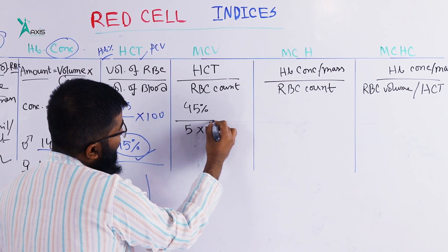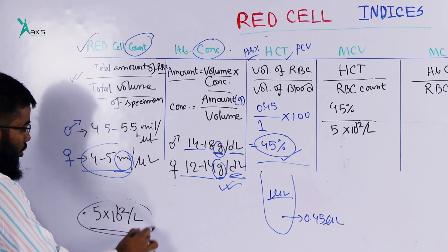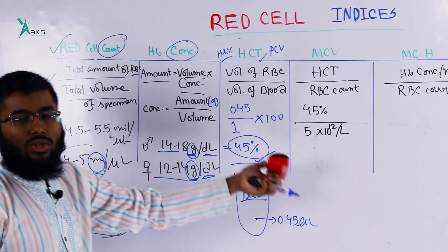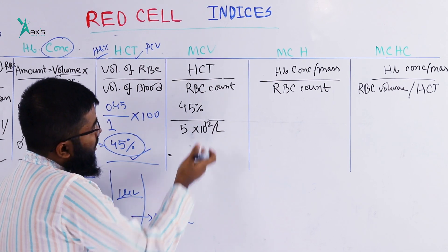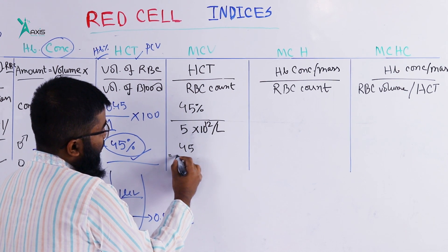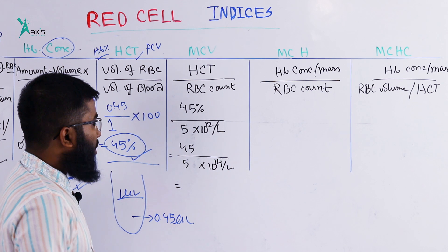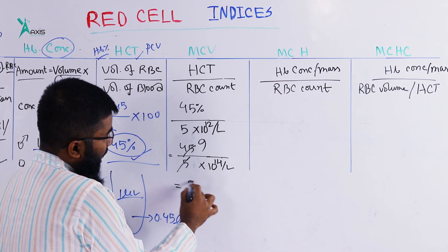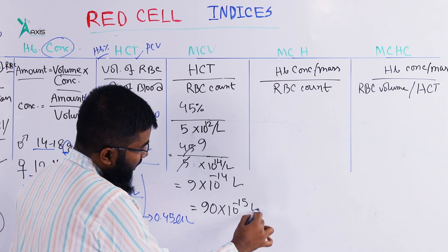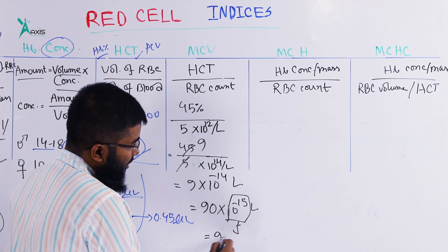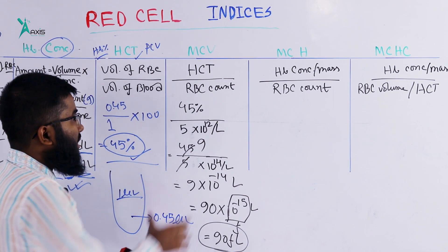With an RBC count of 5 × 10¹² per liter and a hematocrit of 45%, the MCV calculation gives us: 45 divided by 5 × 10¹⁴ per liter, which equals 9 × 10⁻¹⁴ liters, or 90 femtoliters.